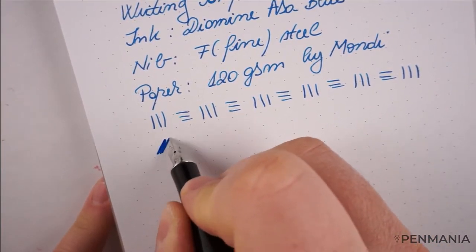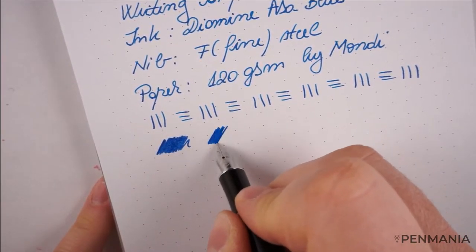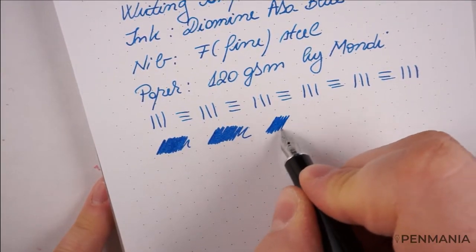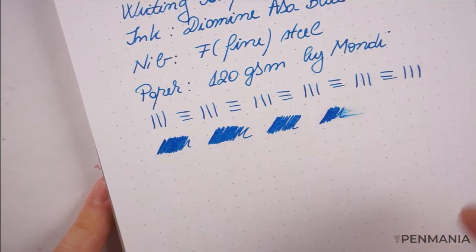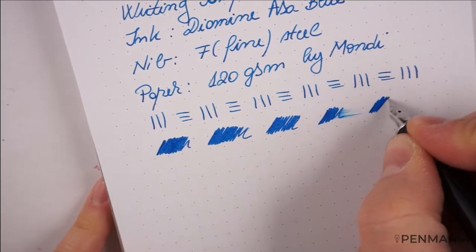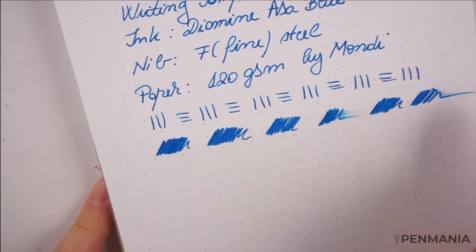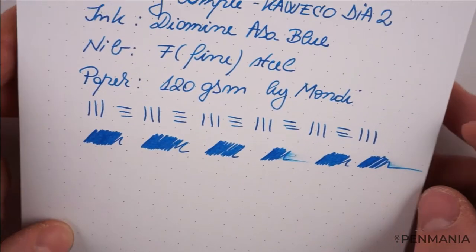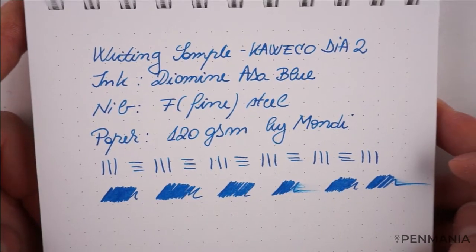In terms of ink flow, I think this is a generous ink flow. I would say medium to wet, or even wet the way I see it. This is a very absorbent paper. I have a Clairefontaine and Tomoe River standing by, so we'll see in a moment. Very nice performance from the fine nib.